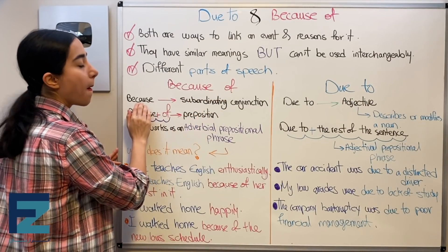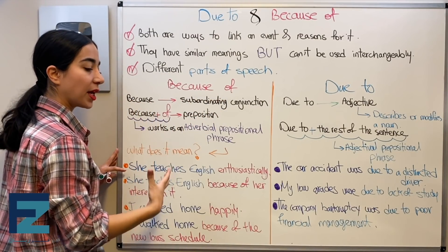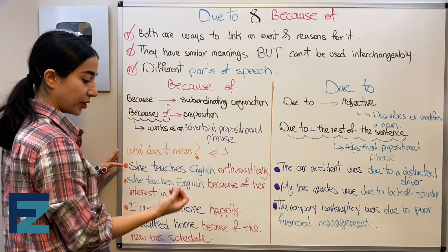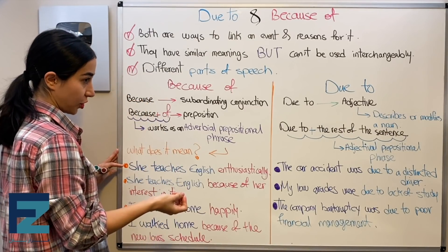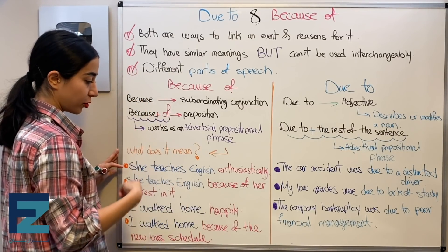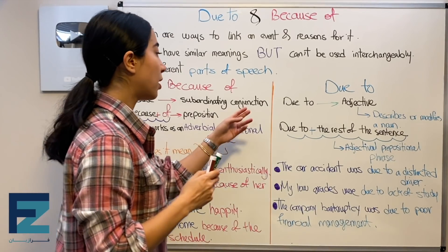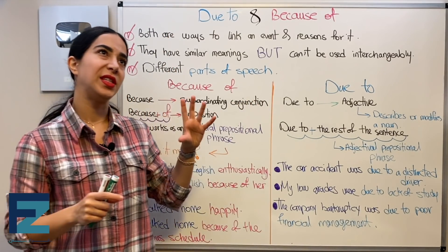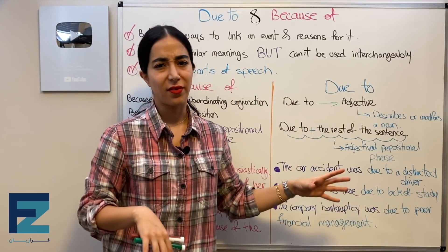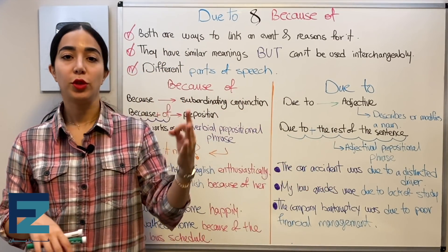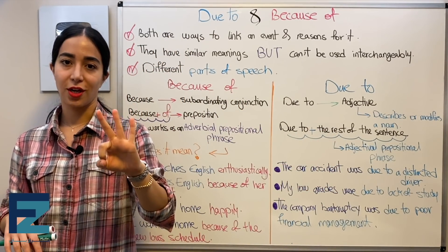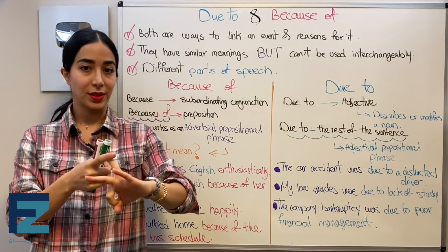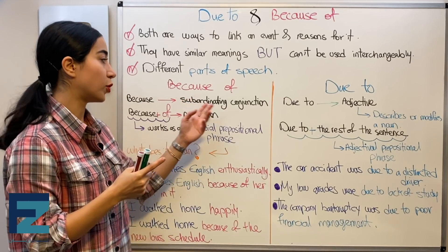'Because' by itself is a subordinating conjunction. Conjunctions are of three types: correlative, coordinating, and subordinating. Subordinating conjunctions connect a dependent clause to an independent clause. Now, 'because of' is a preposition.